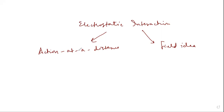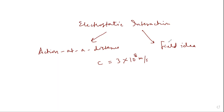Special relativity says that c, the speed of light in vacuum, which is 3 × 10⁸ meters per second, is the speed limit of this universe. That is why we introduced the field idea, and that field idea is in accordance with this speed limit.